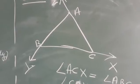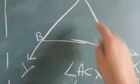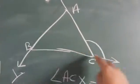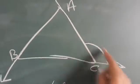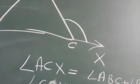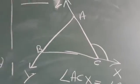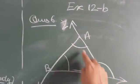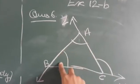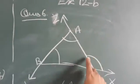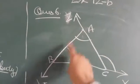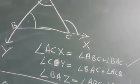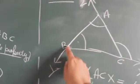Now move on to question number 6। Question number 6 में ACX जो angle है, हमको यह बताना है कि angle ACX किन दो angles के equal होगा। तो due to exterior angle property, यह दो angles के equal होगा: एक यह - BAC, और एक यह - ABC।